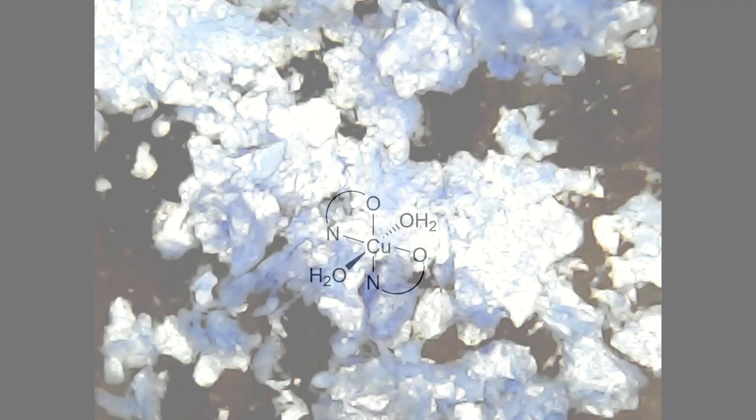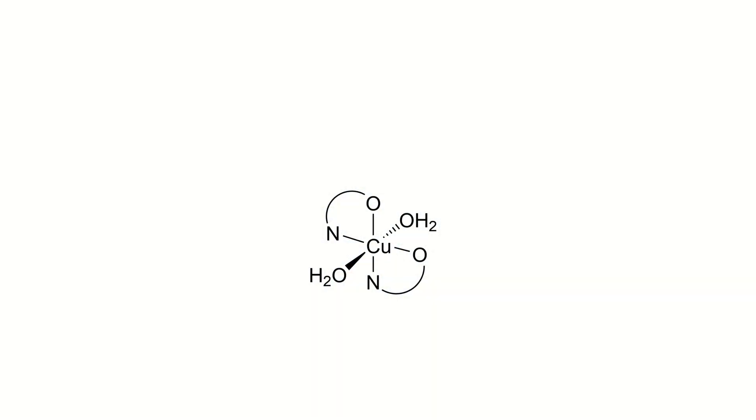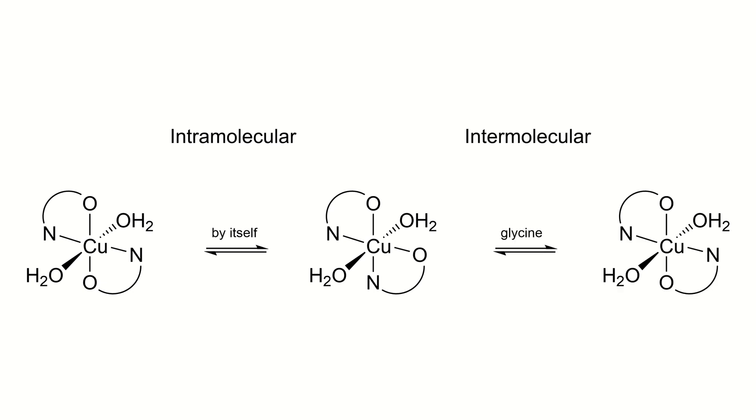Now a little side note on the mechanism of isomerization of this complex. To consider here are two types of mechanisms that may occur. One is an intramolecular mechanism, which would involve only one molecule of the complex to perform the isomerization reaction. And the other is an intermolecular mechanism, which would also involve free glycinate ions in solution.